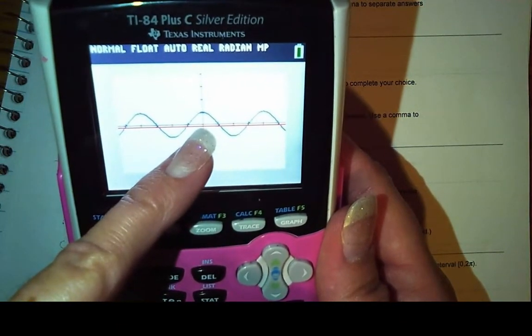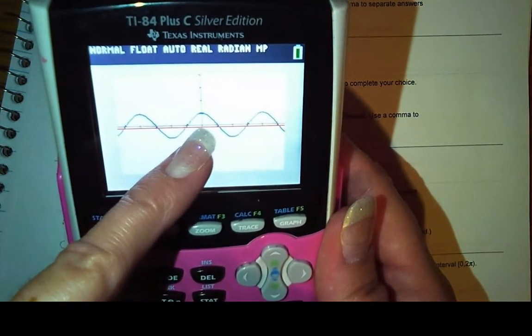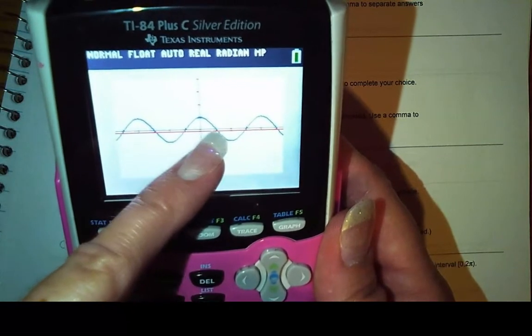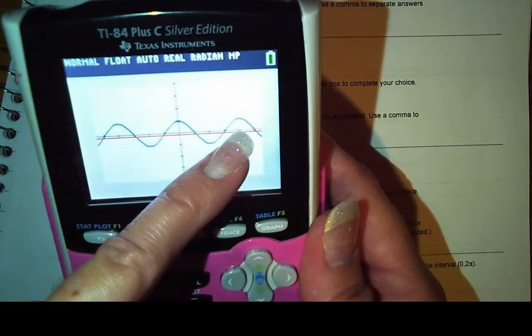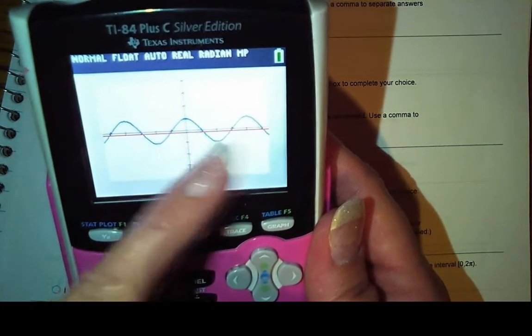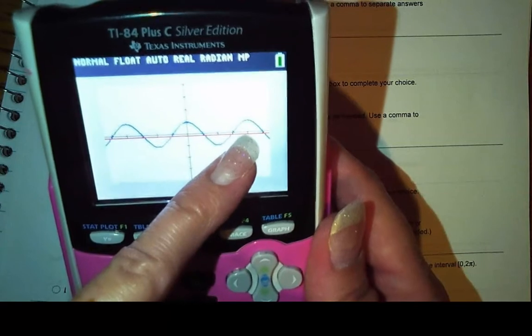So if we're trying to find the two solutions that work on the interval from 0 to 2π, this is 0, this is π/2, this is π, this is 3π/2, and this is 2π. Okay, so there's two things that satisfy this value.